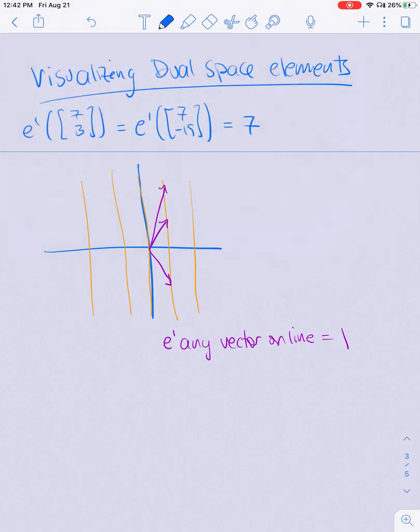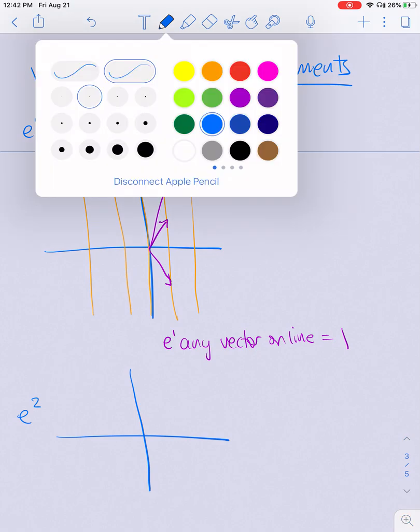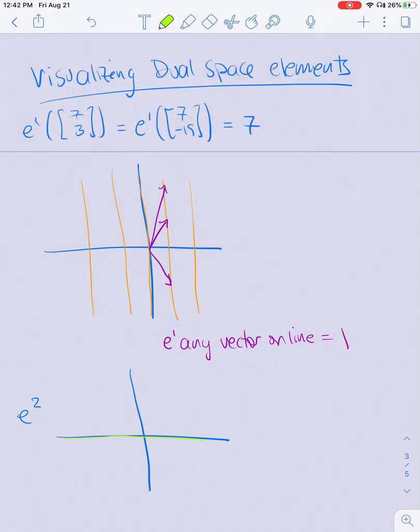And similarly, if I were to take E² and draw all the lines which, draw all the horizontal lines. So here, I'm only drawing some of them, but I could draw any of them. E² is going to take any vectors, any two vectors that land on the same horizontal line to the same value.